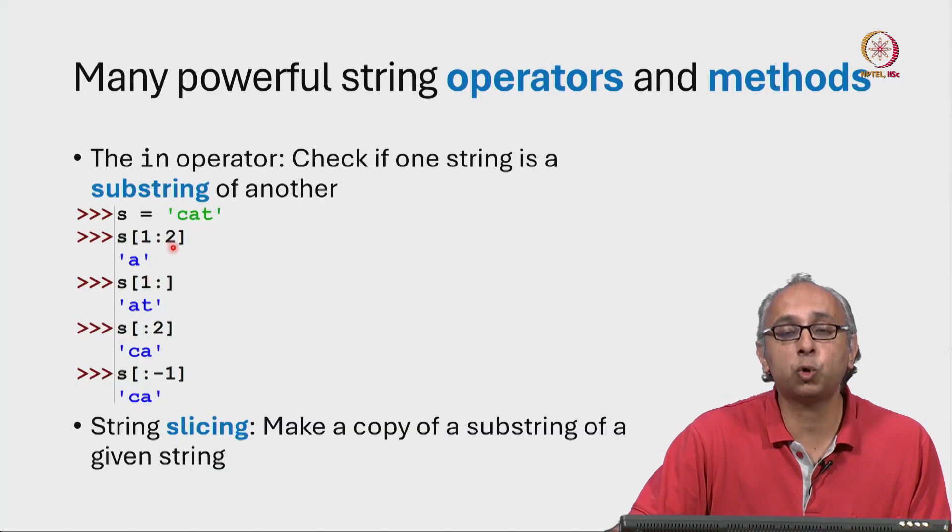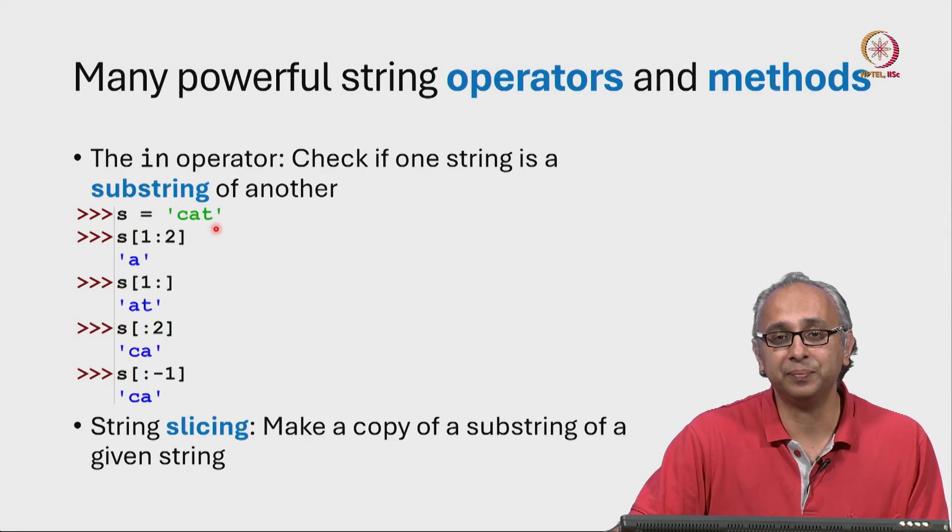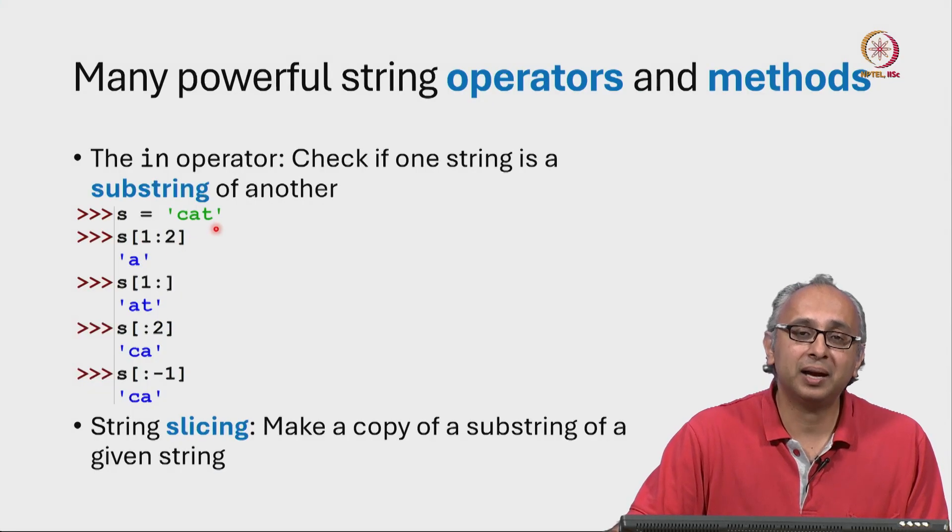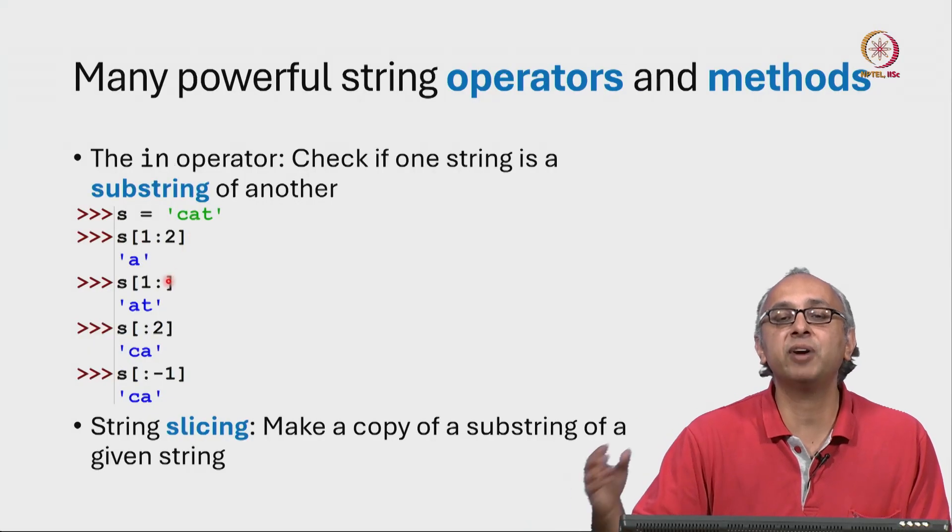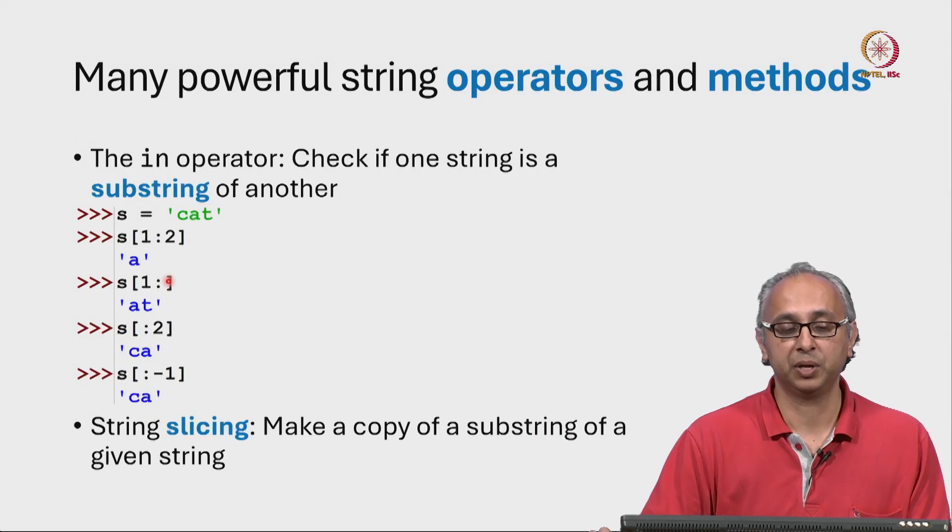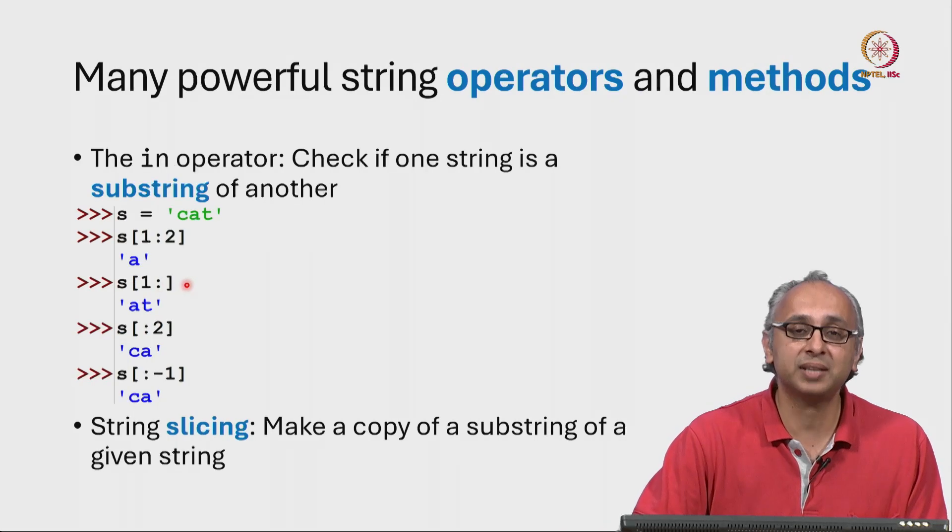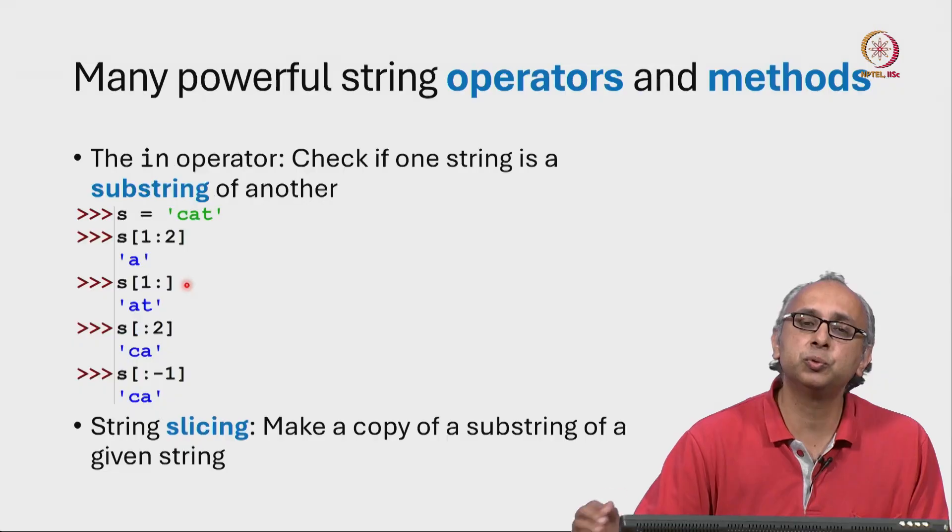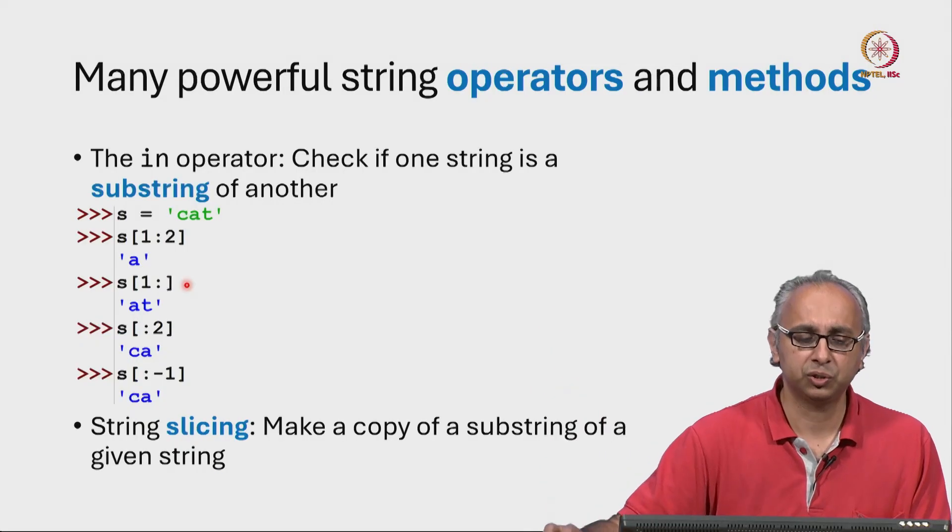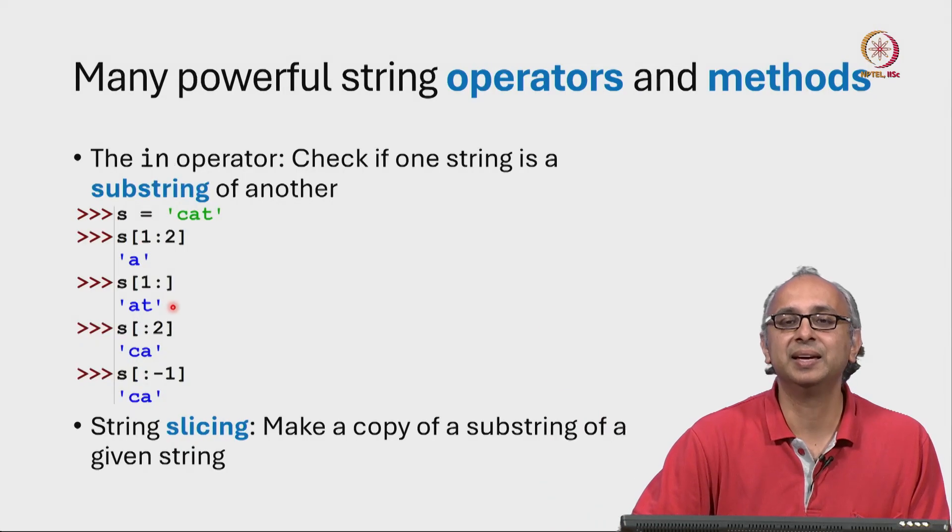If I had said 1 colon 3, I would have got A T. Now Python allows me to drop the number after the colon if I want to go all the way up to the end of the string. So if I just said S[1:], that's the slice starting at index 1 up to the end of the string. So that will just get me A T.